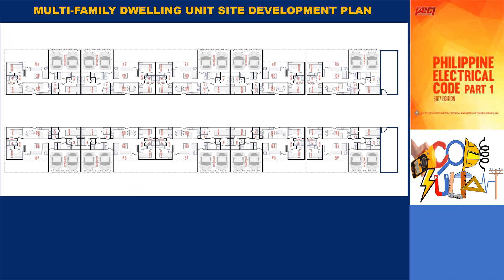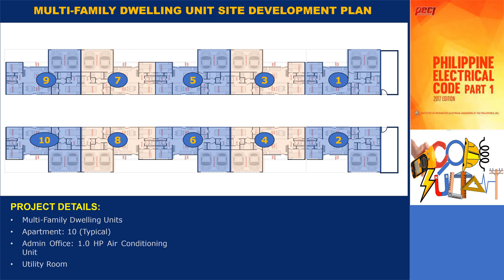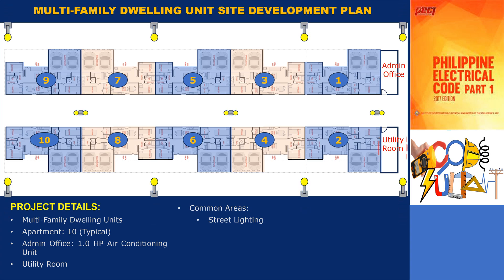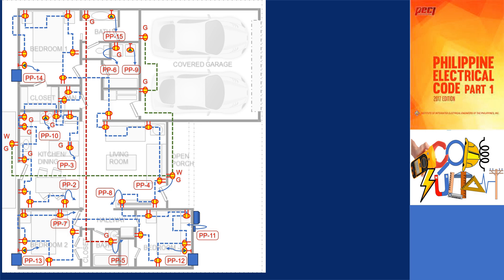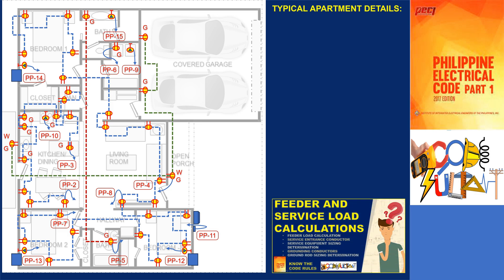Our sample project consists of a multifamily dwelling unit with 10 typical apartments, a utility room, and an administration office. The administration office will have an additional load of a 1-horsepower air conditioning unit, in addition to the standard electrical loads like street lighting in common areas. The service entrance will be positioned on the exterior wall of the utility room, whereas the panel board and meter center will be located inside the utility room. We will be using the same sample project as shown in the previous videos for the typical apartments.